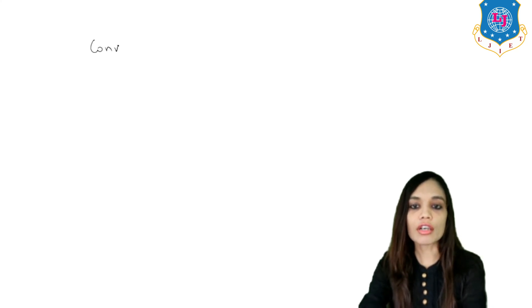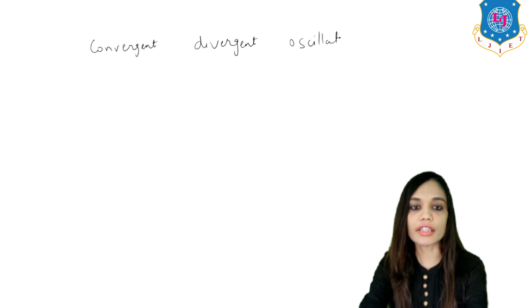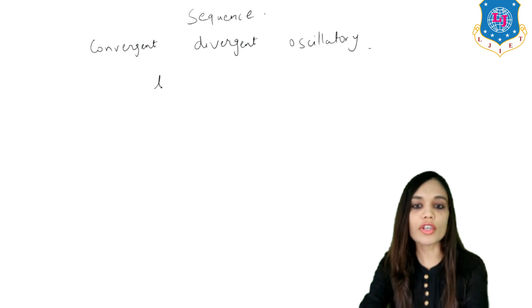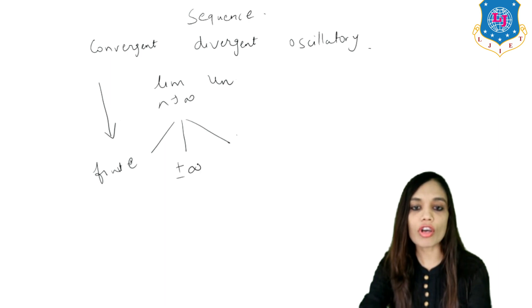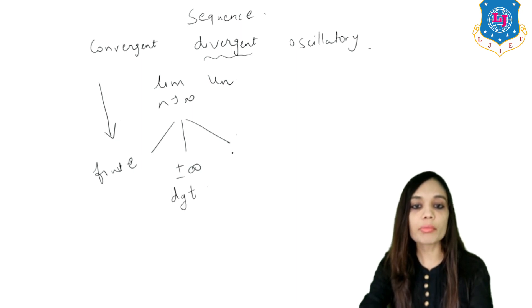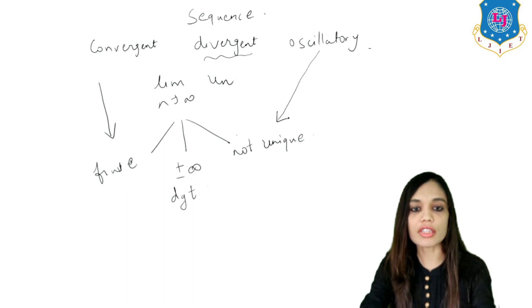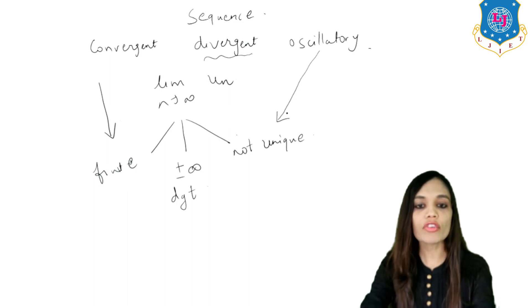In today's session we have studied three types of sequences: convergent, divergent, and oscillatory. To classify a sequence, find lim(N→∞) UN. If the limit is finite, the sequence is convergent. If the limit is ±∞, the sequence is divergent. And if the limit is not unique — more than one answer — the sequence is oscillatory.